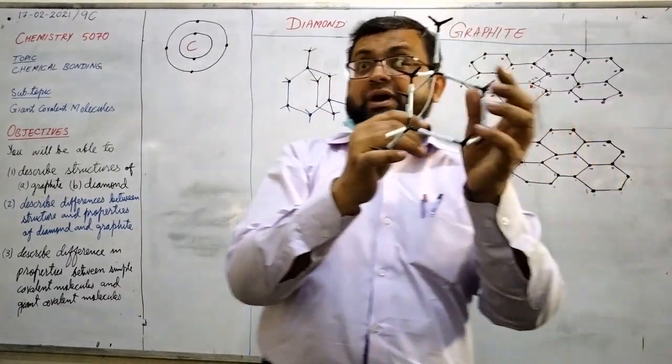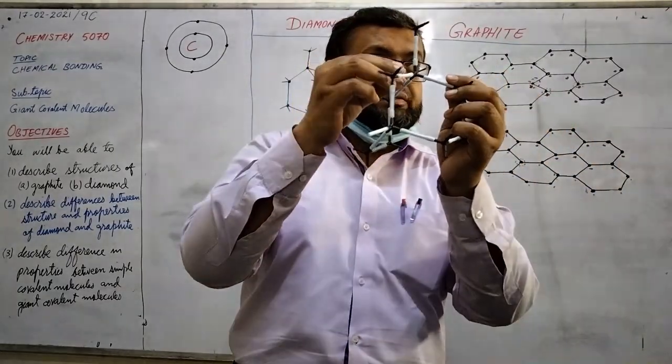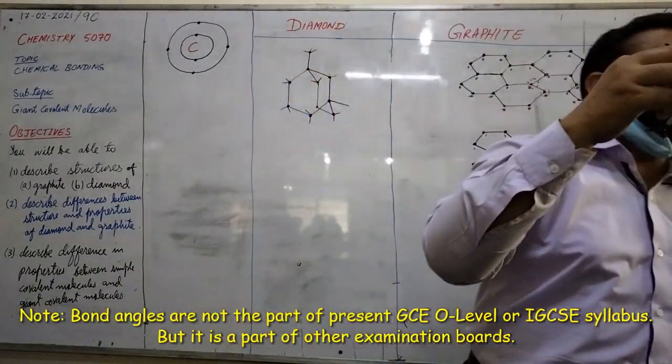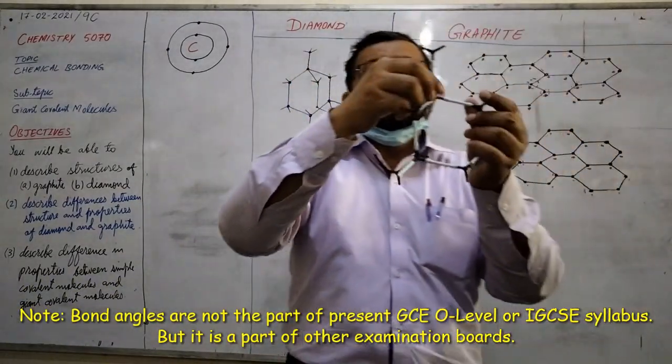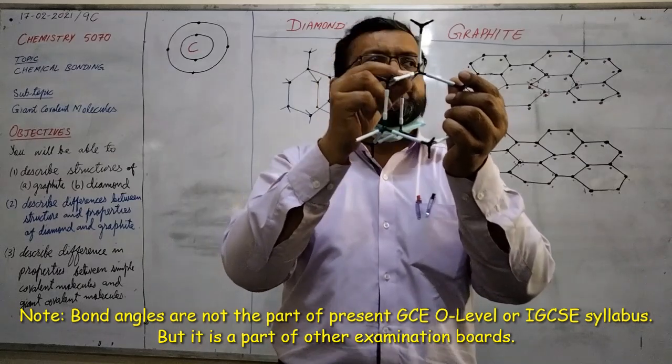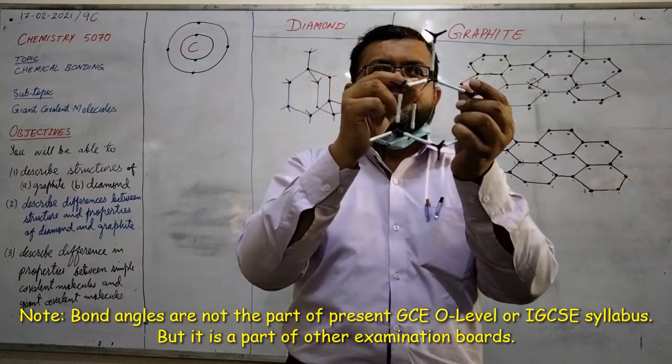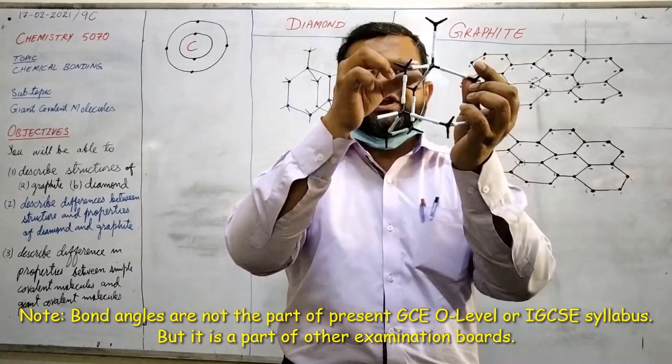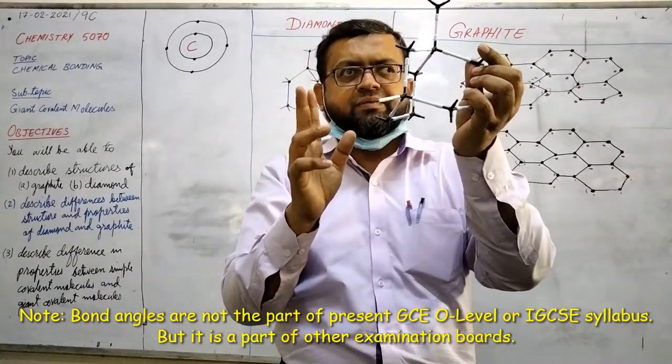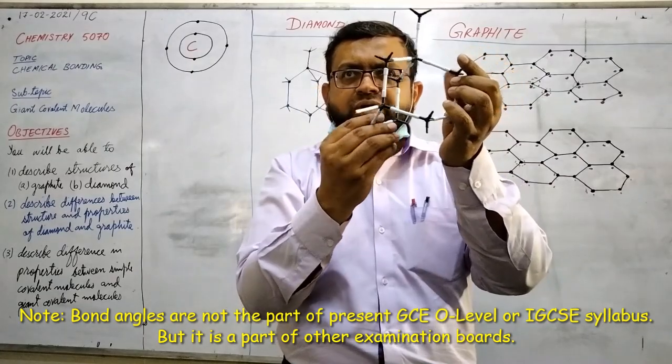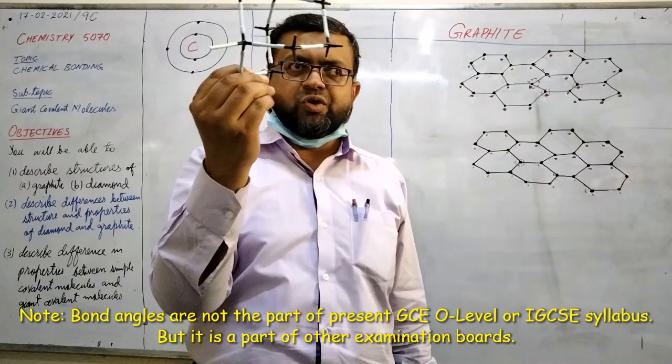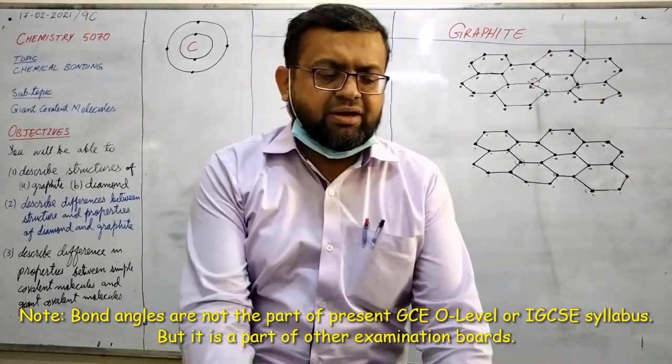So there is a particular angle. In our syllabus angle is not mentioned, but I am telling you that there is an angle of 109.5 degrees for each bond here in diamond. So there is a particular geometrical arrangement in diamond.